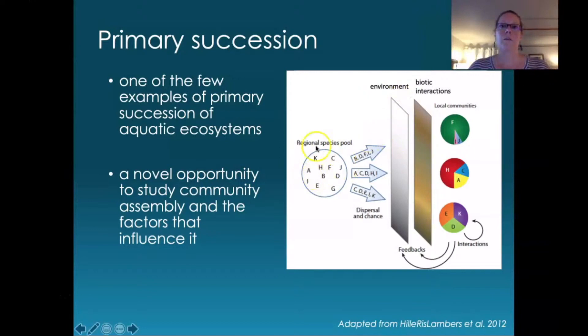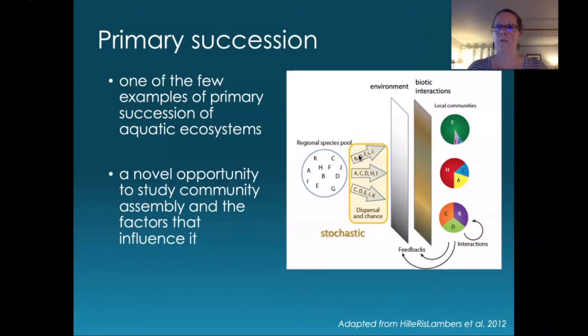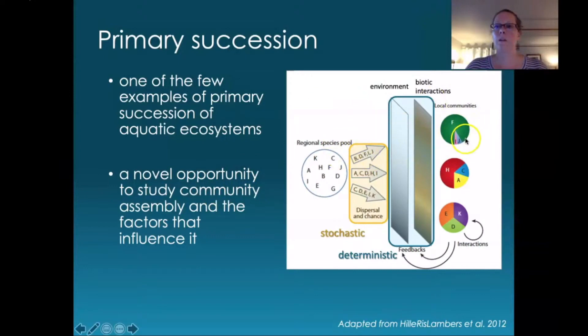In the broader context, we can try to understand which species end up where by thinking about the regional species pool. The first kind of filter is dispersal and chance events — this stochastic filter sorts and influences which species move around. The next set of filters are more deterministic: things like the environment and biotic interactions that happen in communities. Ultimately, we have local communities that are a subset of the regional species pool and may look more or less similar to each other depending on how species interact with these different filters.